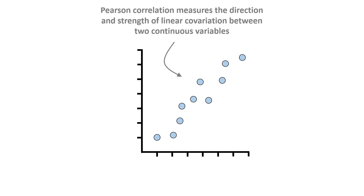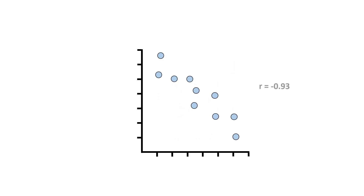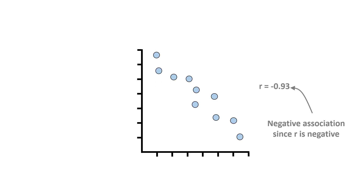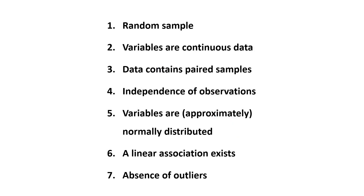To sum up, a Pearson correlation test measures the direction and how strong a linear covariation is between two variables. The result is a single value known as the Pearson correlation coefficient, or r-value. A positive r-value indicates that as one variable increases, so does the other. A negative r-value indicates that as one variable increases, the other decreases. If you square the r-value, you get the coefficient of determination, or r-squared. This r-squared value indicates the amount of variance shared between the two variables. A p-value from the Pearson correlation test is used in hypothesis testing to determine if the correlation between the two variables is statistically significant.